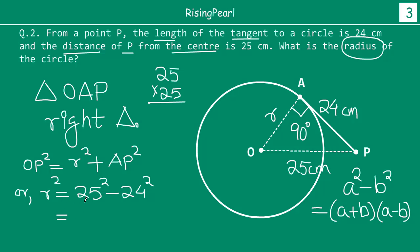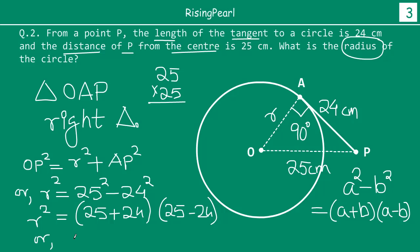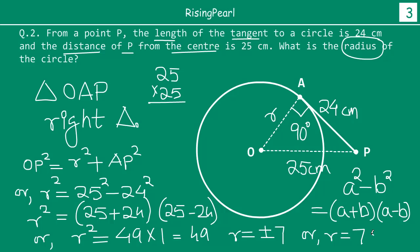Since the radius cannot be negative, R equals 7 centimeters. So the radius of the circle is 7 centimeters.